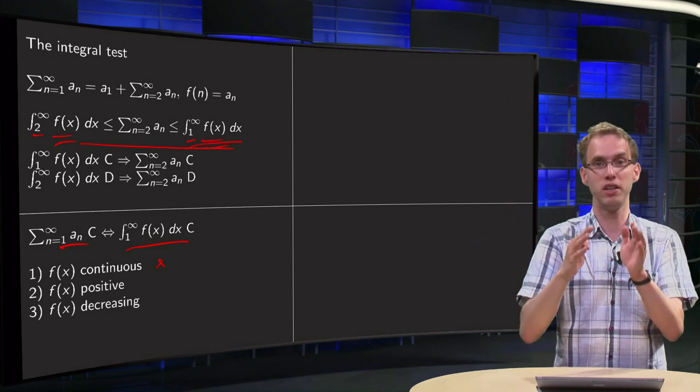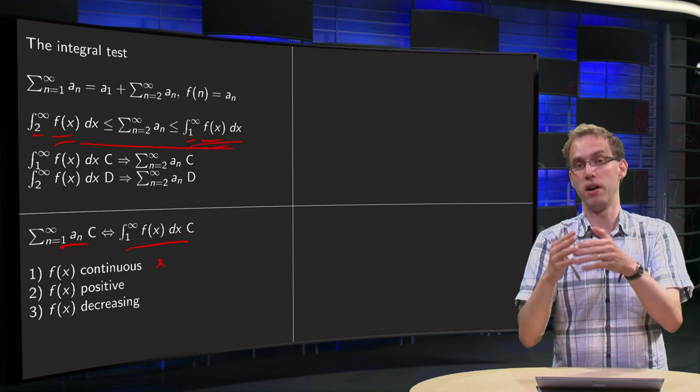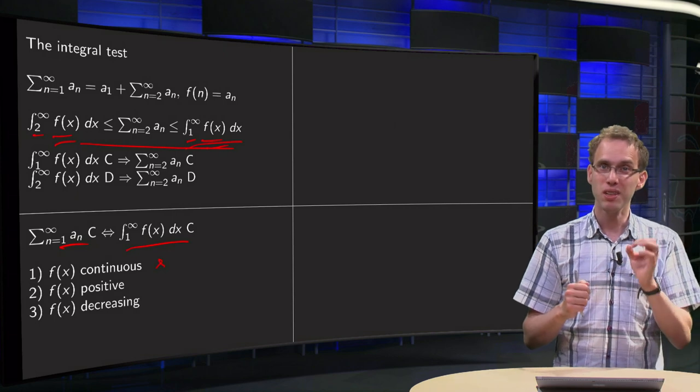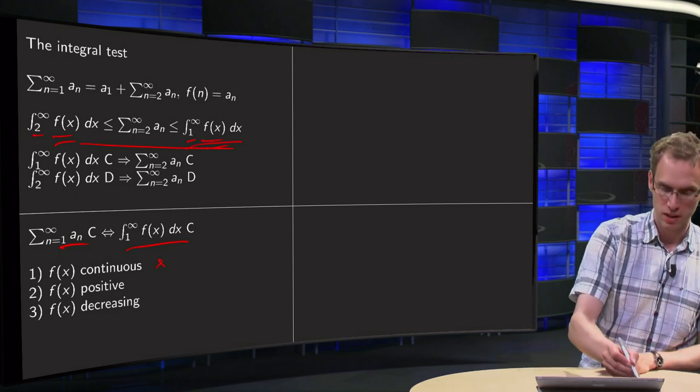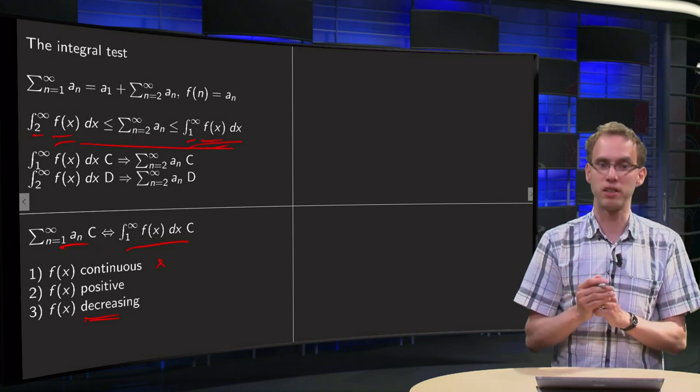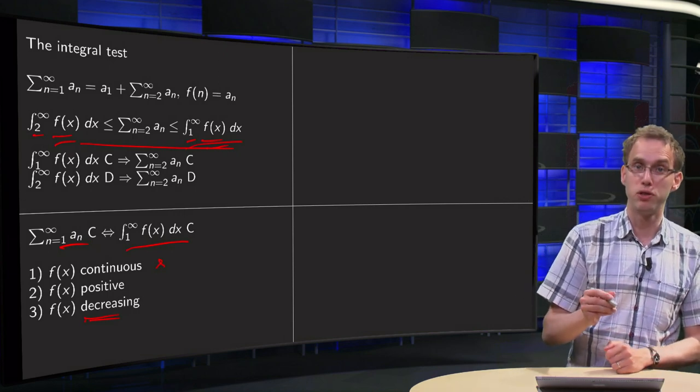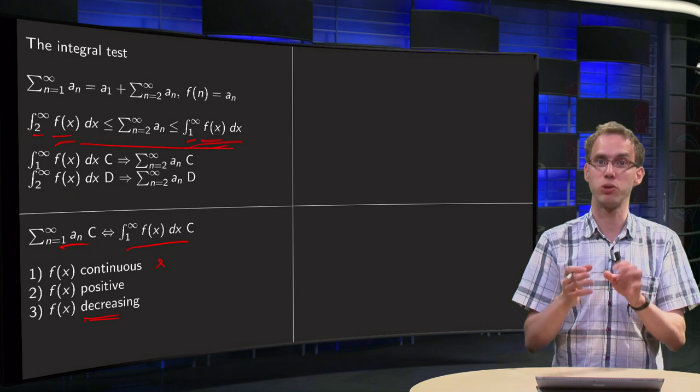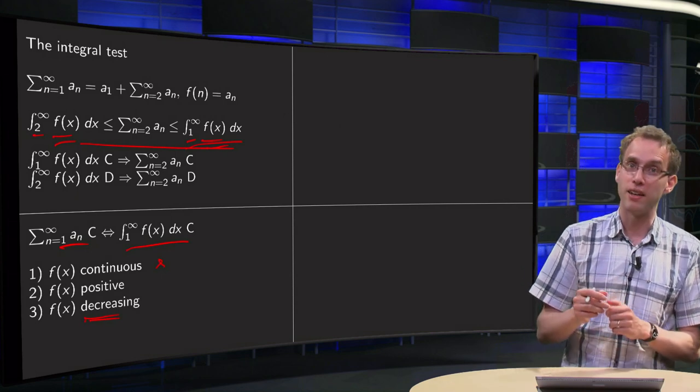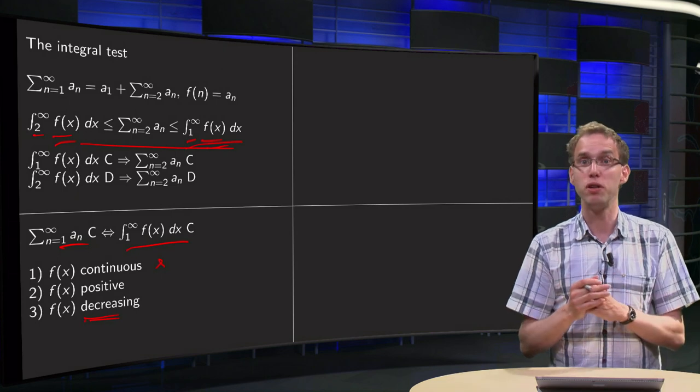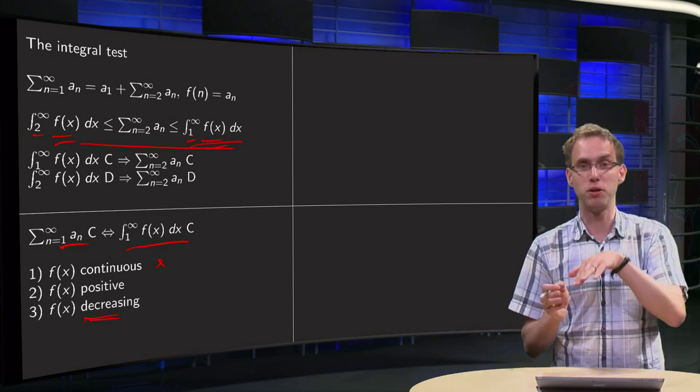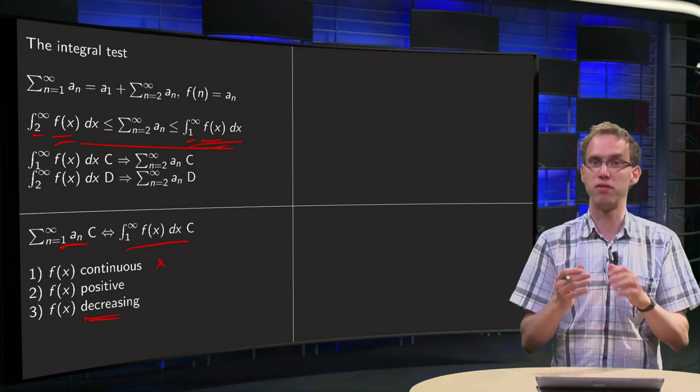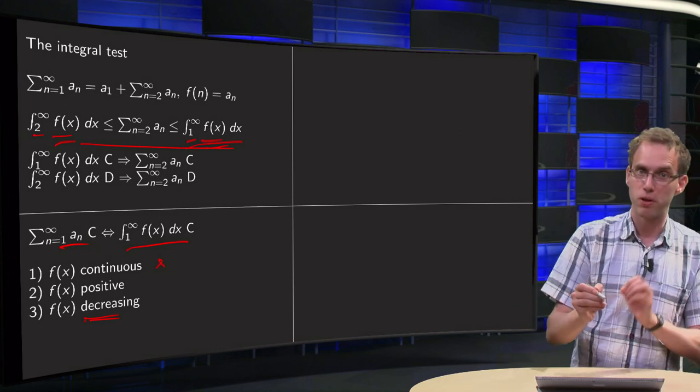Actually, the only real condition we need is the third one, the decreasing part. The continuity is only needed in order to ensure the integration, so I have to be able to integrate, continuity is a bit too strong there. And the positivity, if f(x) wouldn't be positive, if it would start to become negative, and then the limit doesn't exist, and I have divergence anyway. So the real important condition is the third one.